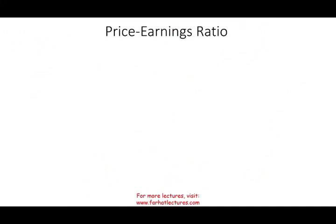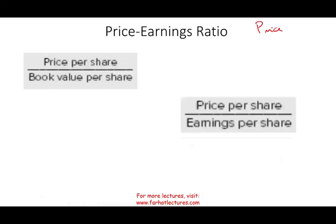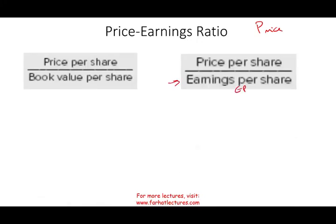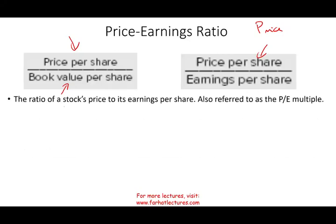Let's look at the PE ratio — the price to earnings ratio. It's also a multiple: the price of the stock divided by earnings per share (EPS). Notice the similarities — the price to book is price per share divided by book value, and the PE ratio is price per share divided by earnings per share. So the numerator is the same. The PE ratio is also referred to as the PE multiple.